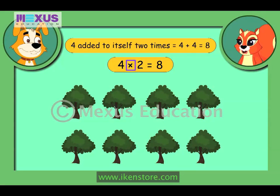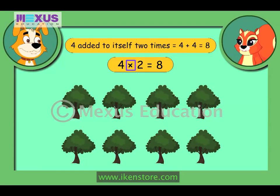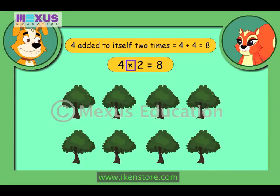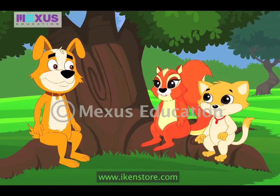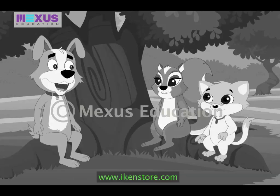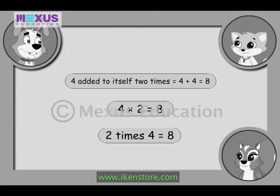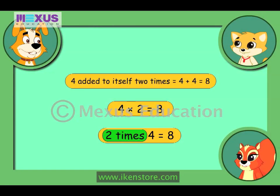Observe the symbol used here. It is used for multiplying numbers. Fantastic! Well done! It seems you have understood this concept very well. Another way of saying 4 multiplied by 2 is 2 times 4, which is equal to 8.